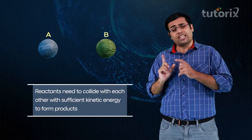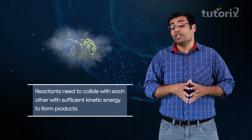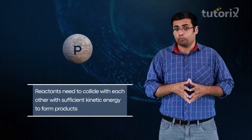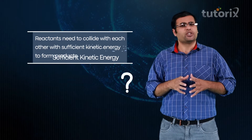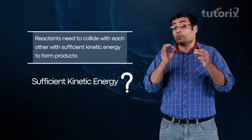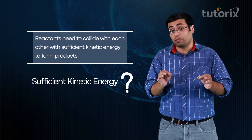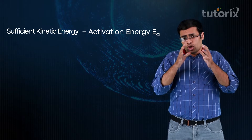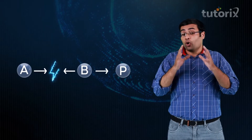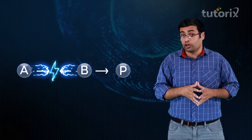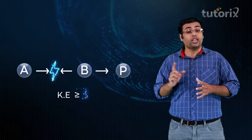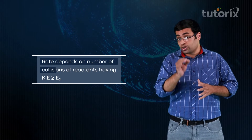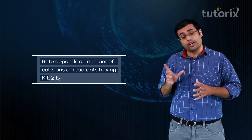Reactants, just like these rocks A and B, need to collide with each other with sufficient kinetic energy in order to lead to the formation of product P. This sufficient kinetic energy is nothing but activation energy Ea, which we have already studied in earlier classes. Product P will form only from those collisions in which the reactant molecules have kinetic energy greater than or equal to Ea. So, rate depends upon the number of such collisions.